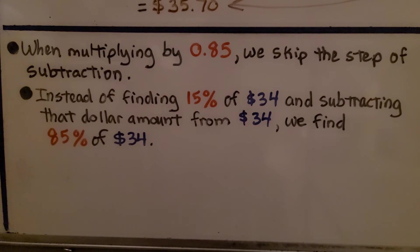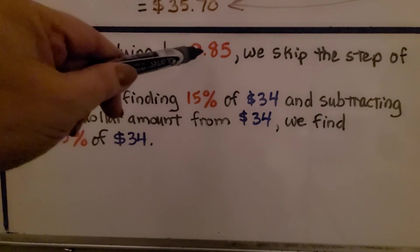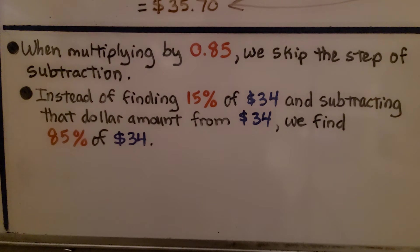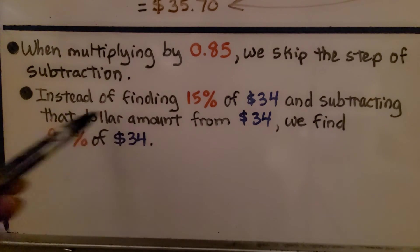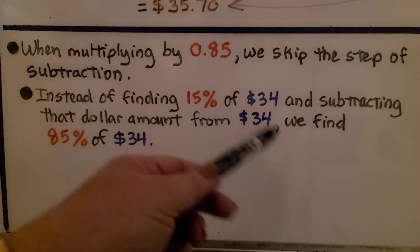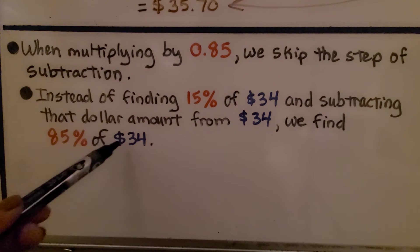When multiplying by the 85 hundredths, the 0.85, we skip the step of subtraction. Instead of finding 15% of $34 and subtracting that dollar amount from $34, we just find 85% of $34.